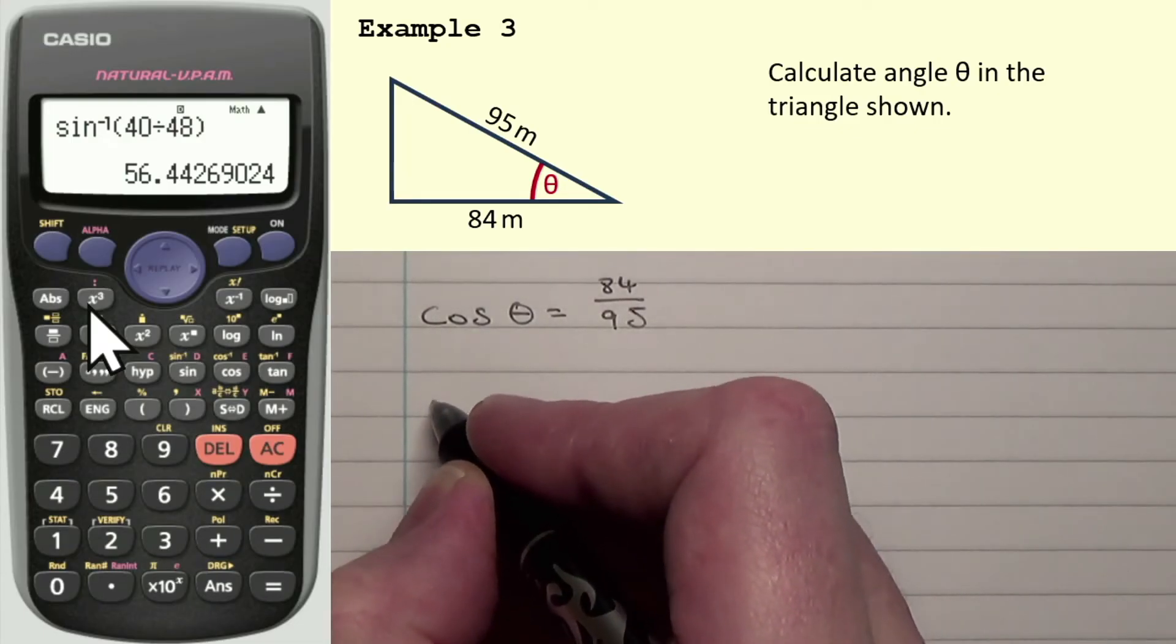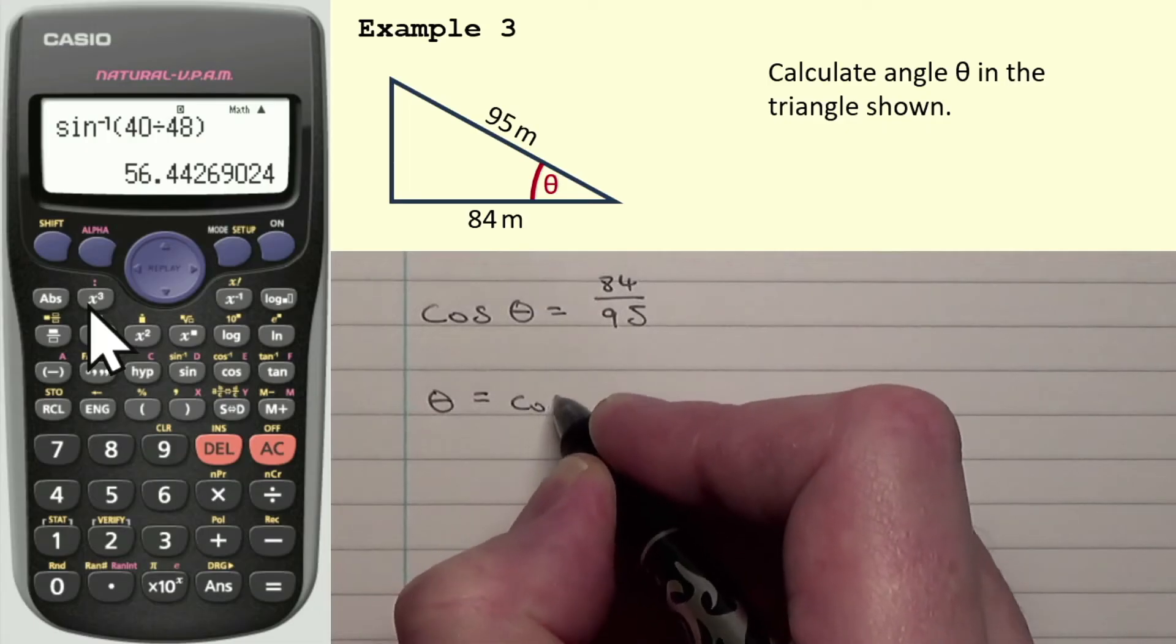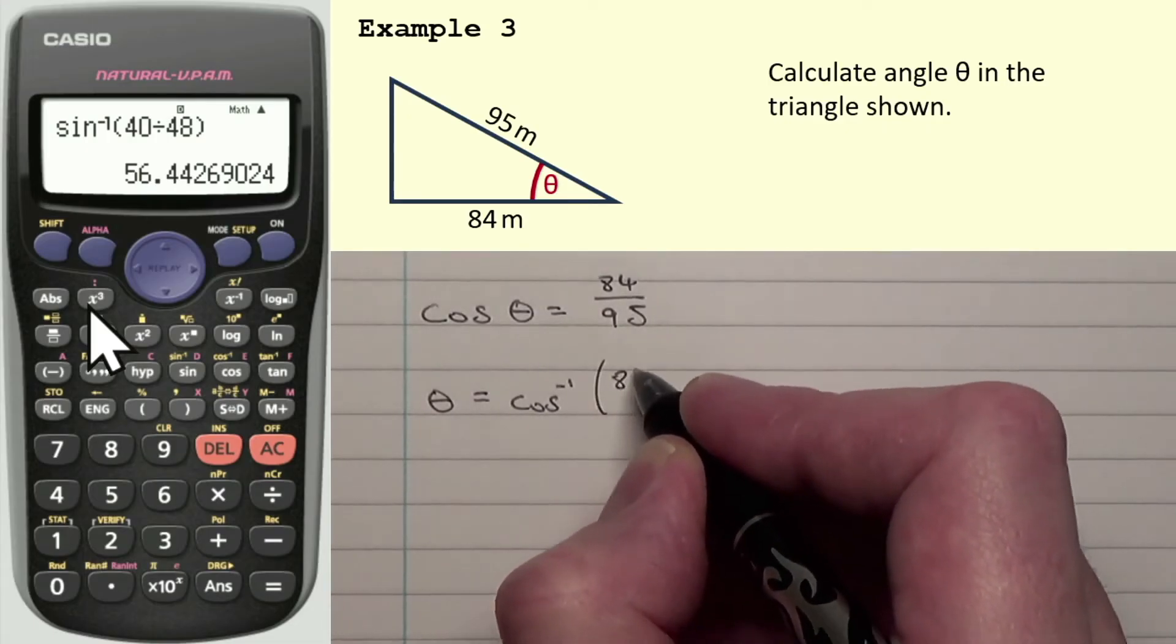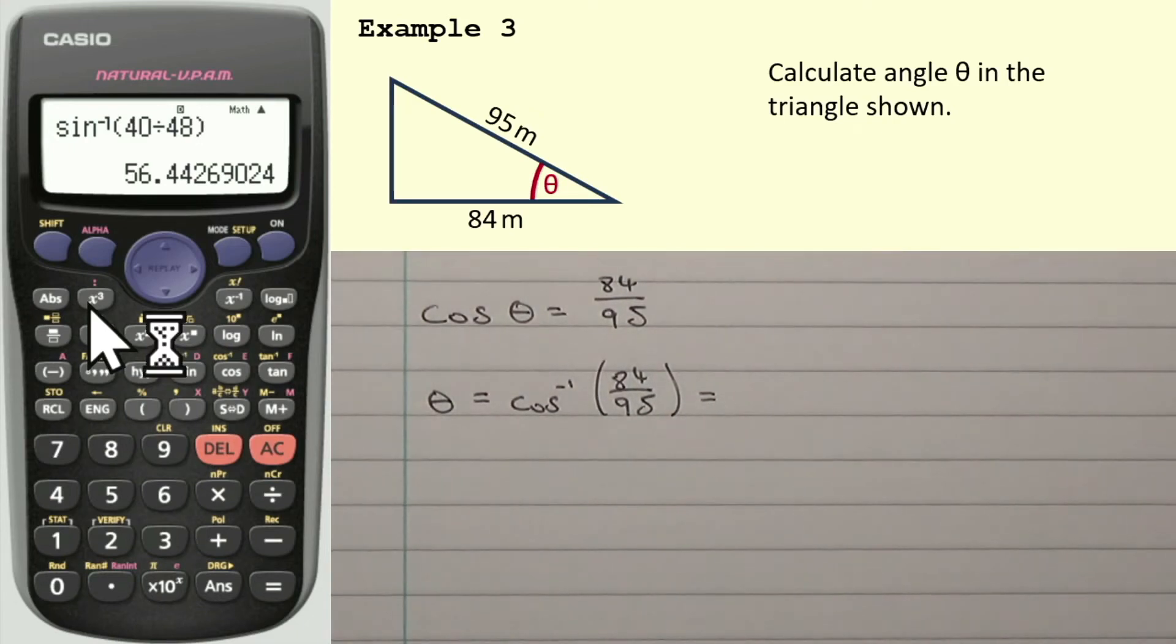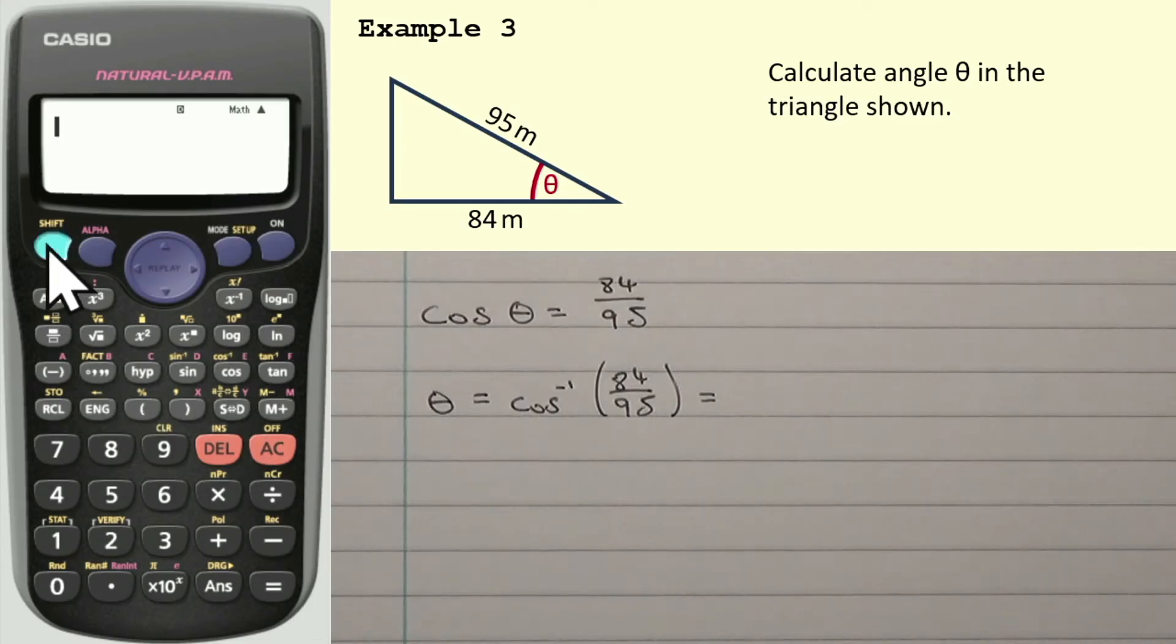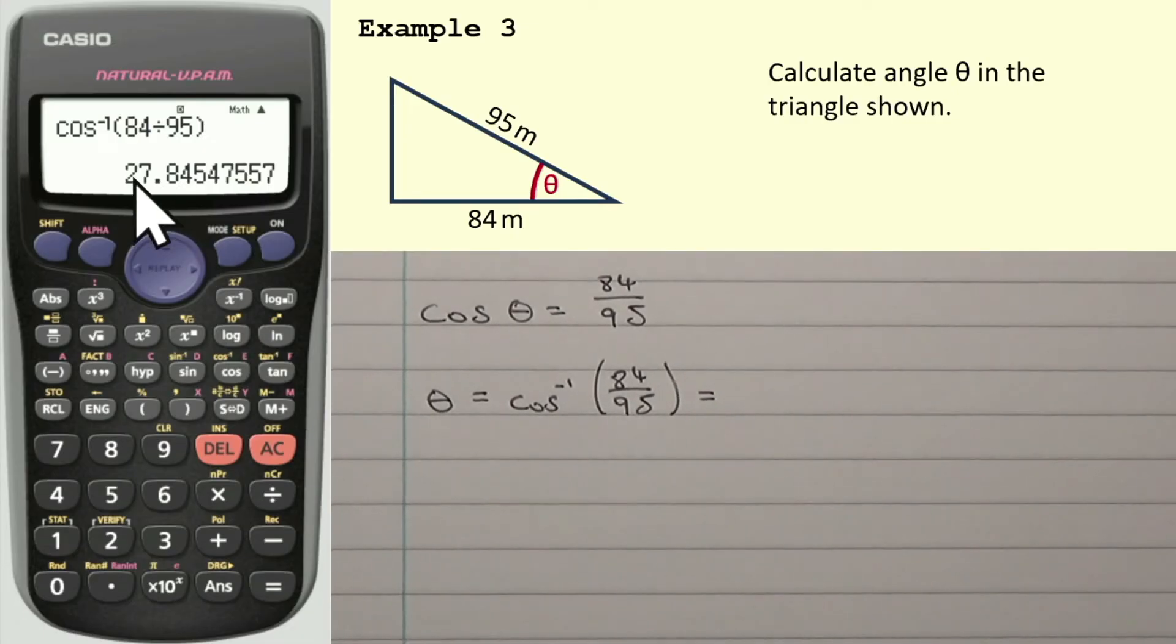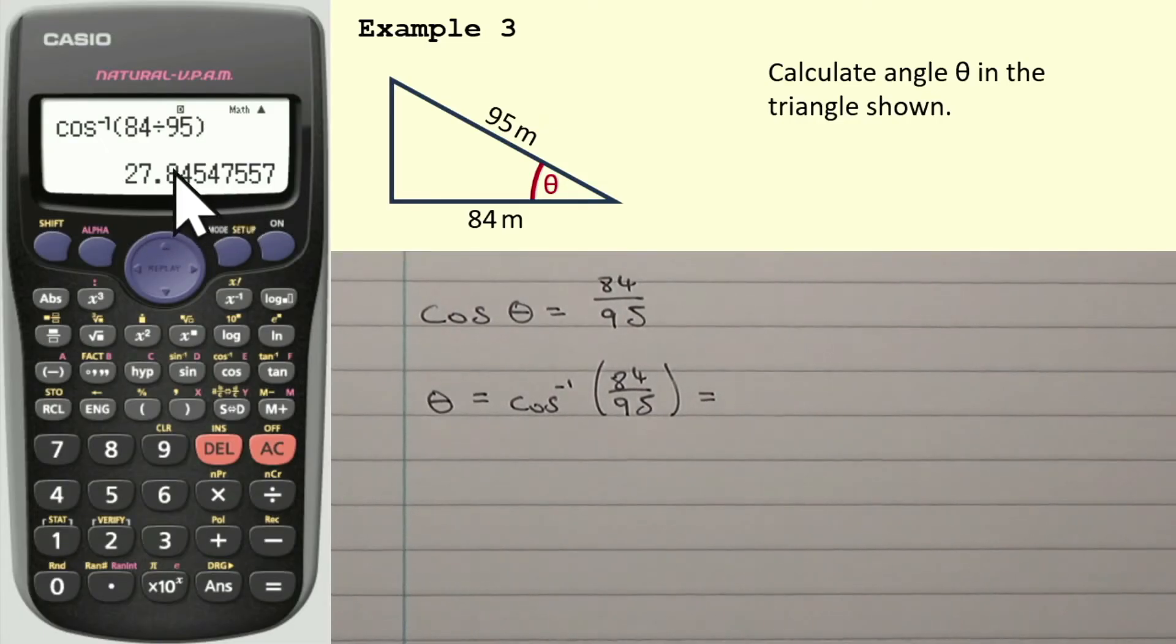So that, of course, means that theta is equal to cos to the minus 1, 84 over 95. Press shift and the cosine button, 84 divided by 95, close bracket, is equal to. Now, again, two significant figures. The number after the 7, so I've got 27, but the number after that 7 is bigger than 5. Remember, if it's 5 or larger, I then would round up this number here. So I'm going to round that to 28 degrees.